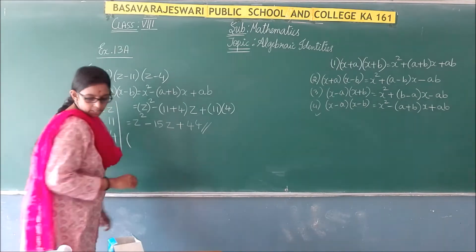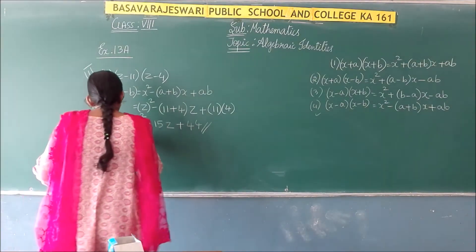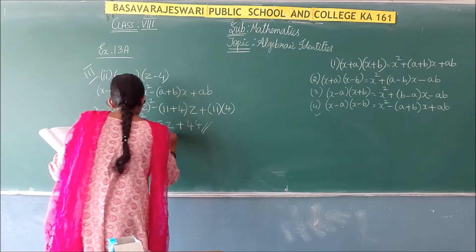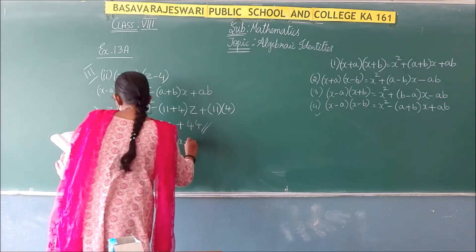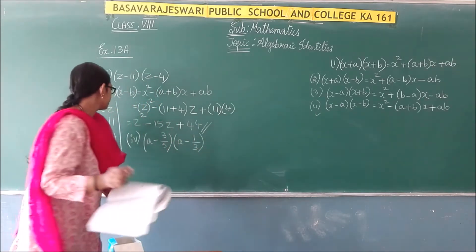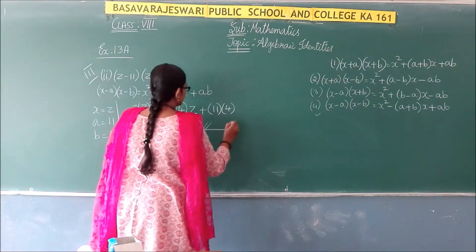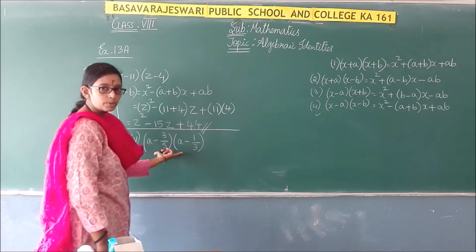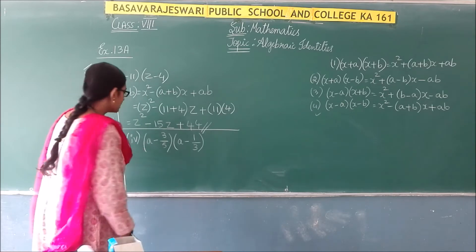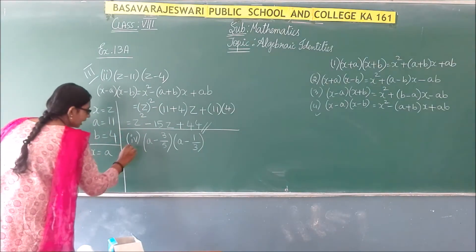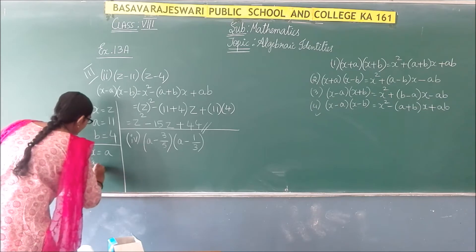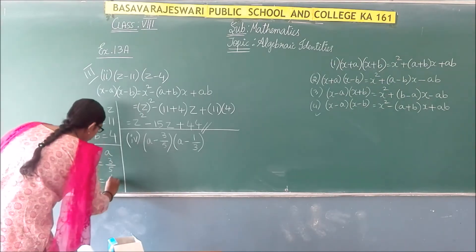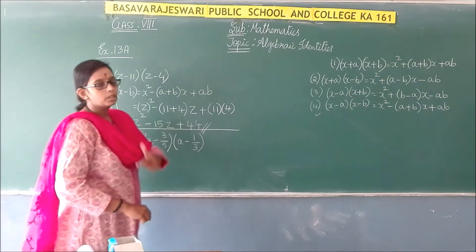Now let us move to the fourth problem: (a - 3/5)(a - 1/3). In both expressions we have a negative sign, so the same identity applies. In place of x we have a, in place of a we have 3/5, and in place of b we have 1/3. Substitute to get the RHS.